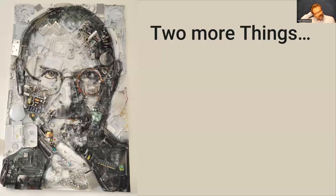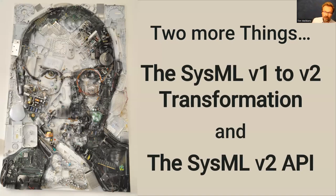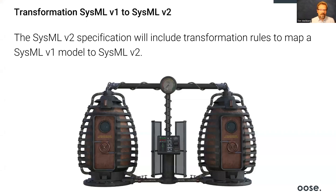Two more important things very briefly. First, the transformation from SysML v1 to SysML v2 — important because many companies have significant investments in SysML v1. The transformation rules mapping SysML v1 elements to SysML v2 elements will be part of the SysML v2 specification. There is also a pilot implementation of this transformation, not publicly available for some reasons, but it is implementable. Hopefully in the future, tool vendors will implement this transformation.